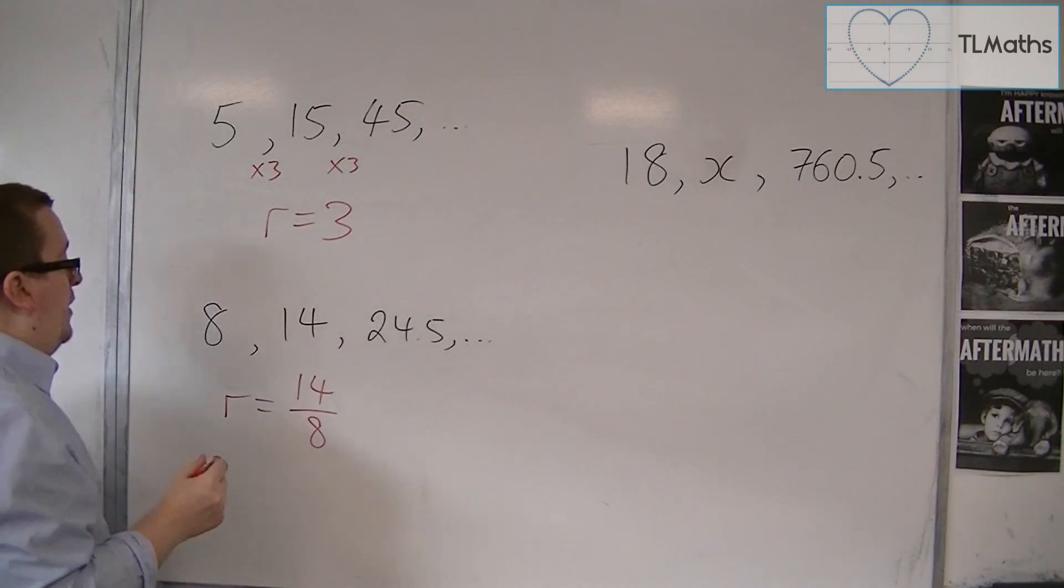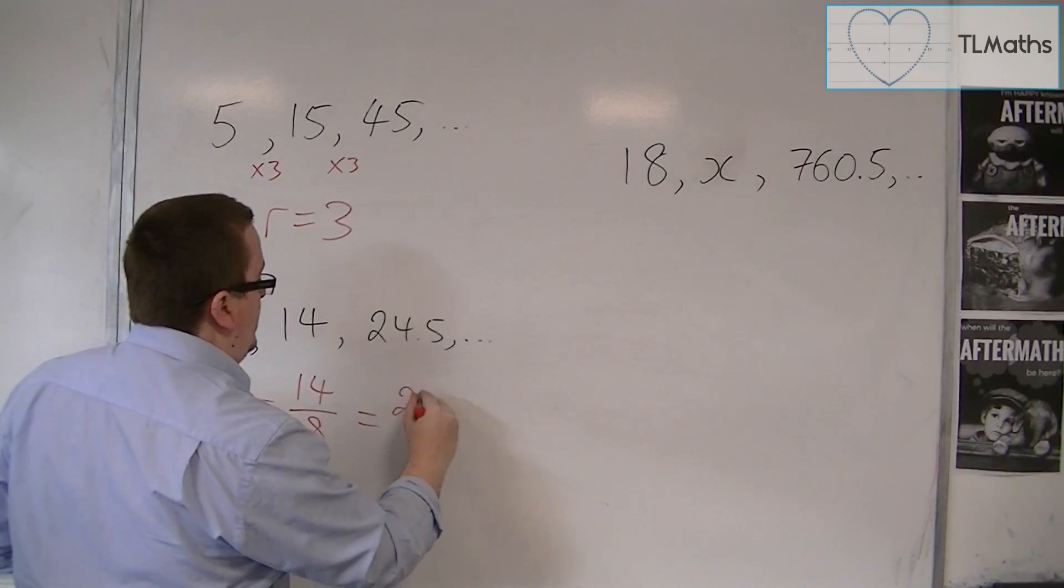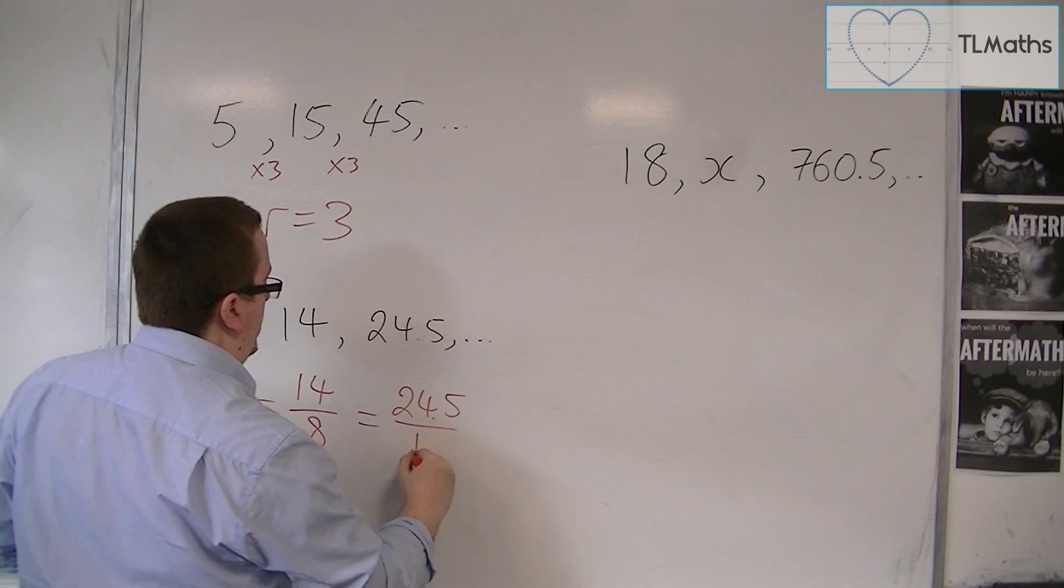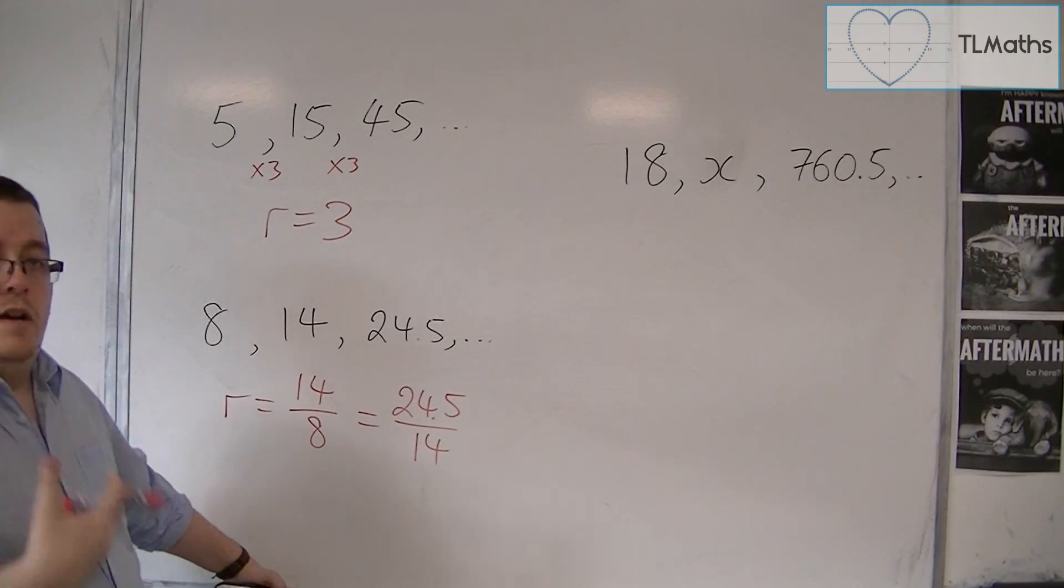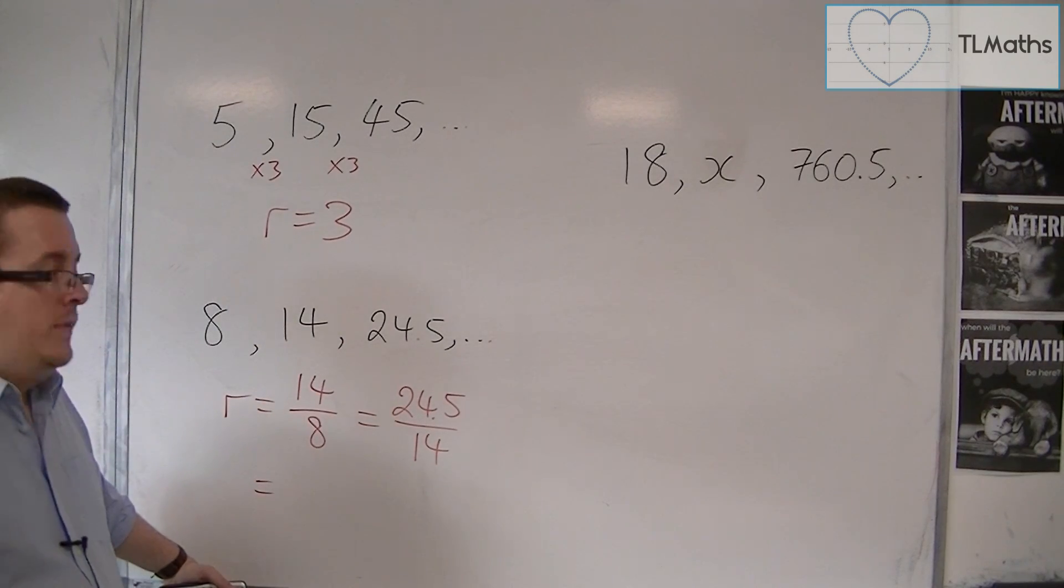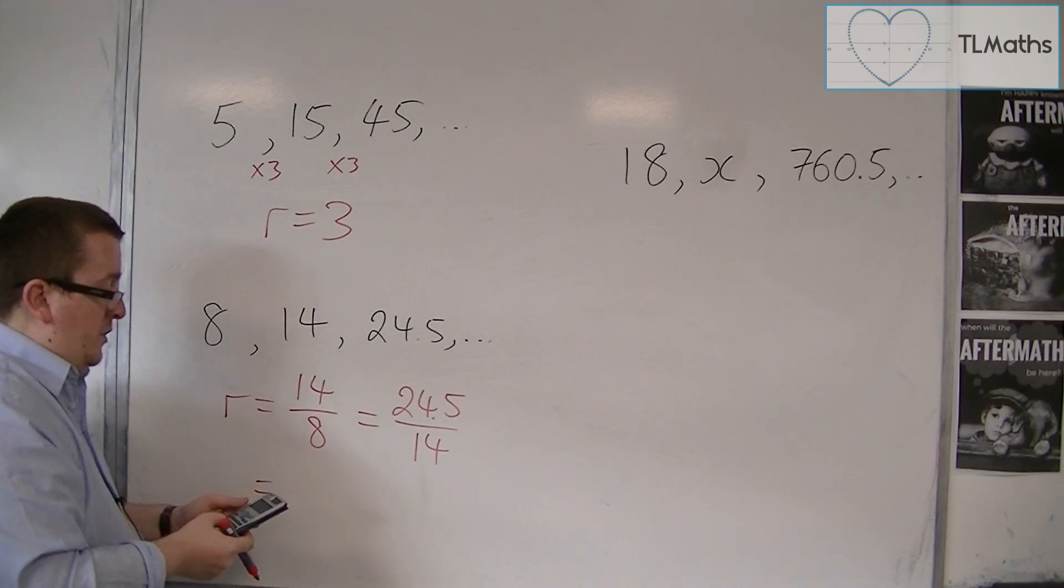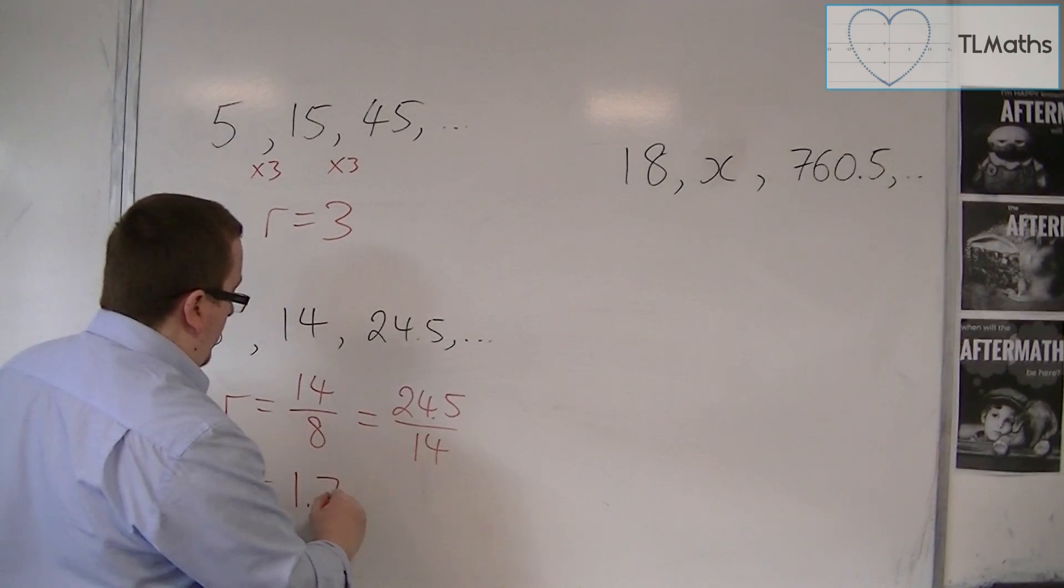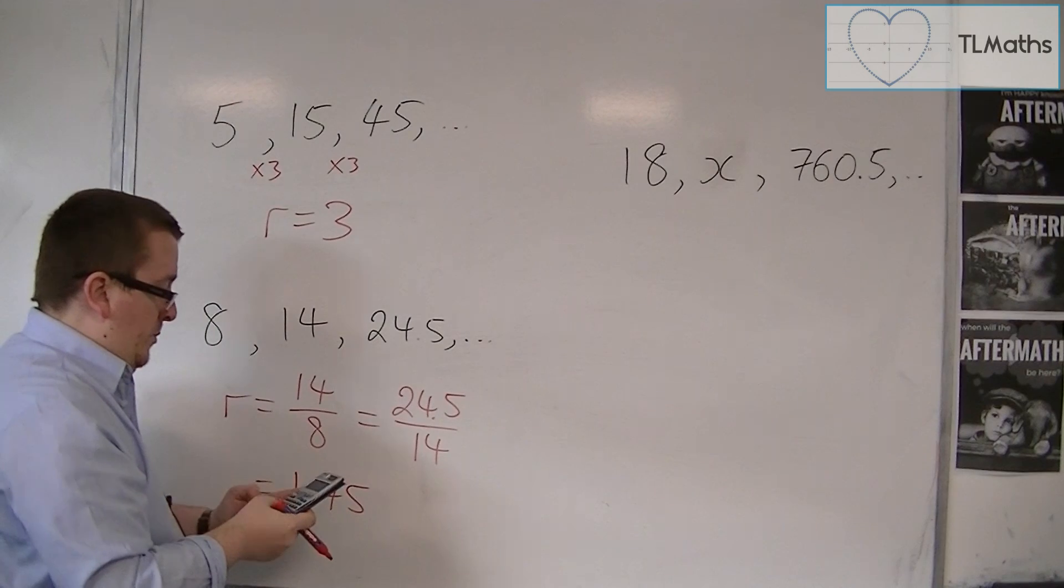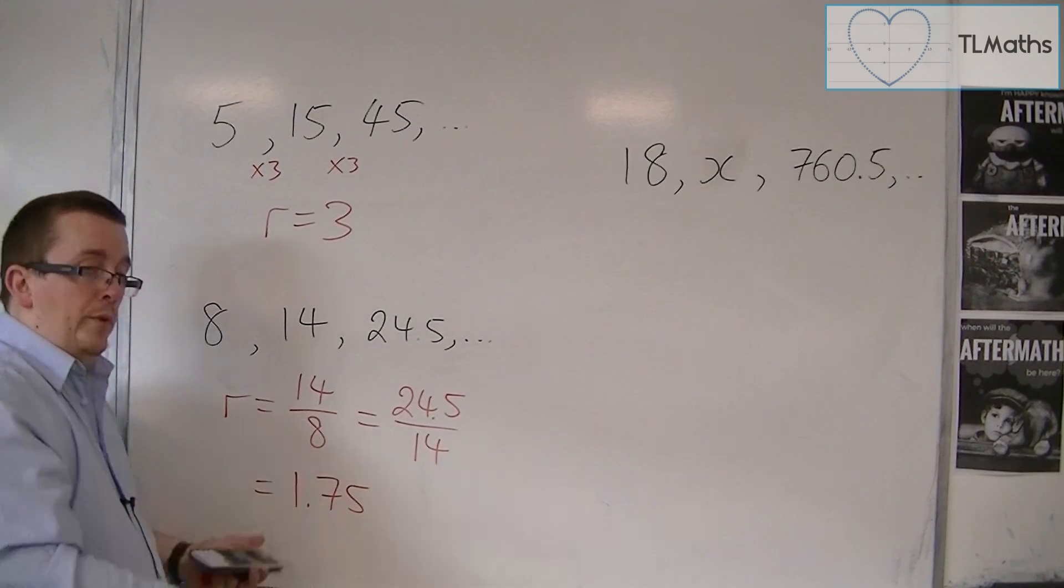So you could either do 14 divided by 8 or you could do 24.5 divided by 14. It doesn't matter. Either way, you should get exactly the same answer. So 14 divided by 8 is 7 quarters or 1.75. So if we try 24.5 divided by 14, you get 1.75.